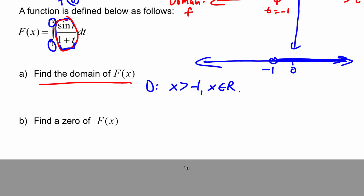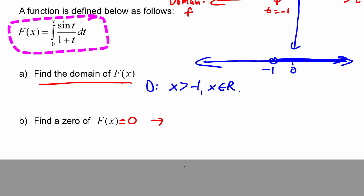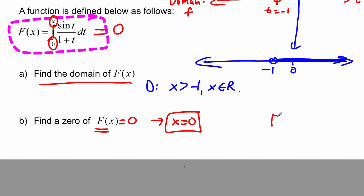What about a zero of the function — an x-intercept for big F? Can we find a value of x where big F(x) equals zero? Since big F(x) is a definite integral, we know that when the two limits of integration are equal, the definite integral equals zero. So we know that an x-intercept of big F is x equals 0. We've found a point on big F even though we don't know its equation — we know a point on it and we know its domain.